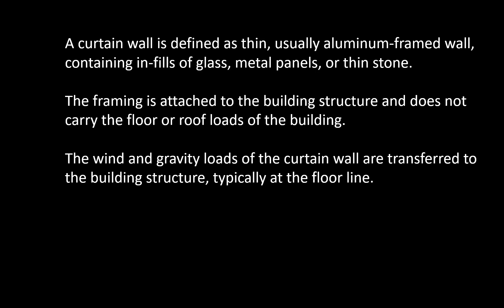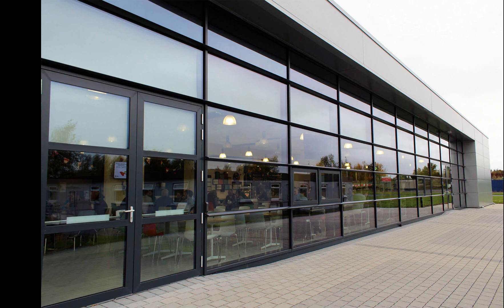A curtain wall is defined as a thin, usually aluminum-framed wall containing infills of glass, metal panels, or thin stone. The framing is attached to the building structure and does not carry the floor or roof loads of the building. The wind and gravity loads of the curtain wall are transferred to the building structure, typically at the floor line.